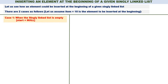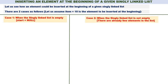Case 1: when the singly linked list is empty, that is when start is equal to null. Case 2: when the singly linked list is not empty — it means there are already a few elements in the linked list and start is not equal to null. So case 1: start is equal to null; case 2: start is not equal to null.